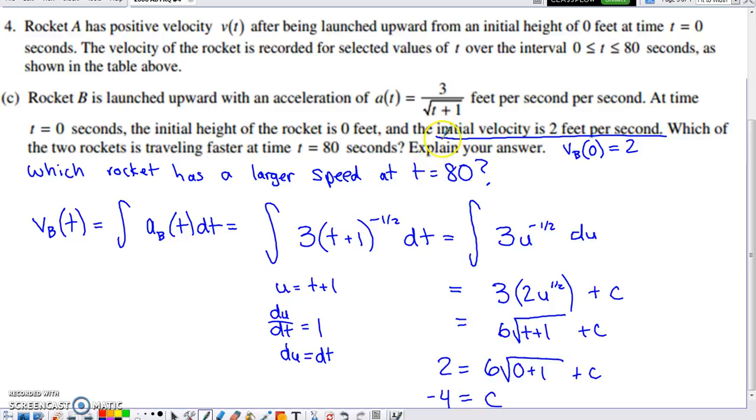I used what I underlined back here. The initial velocity of rocket B is 2 feet per second. So I knew this is my velocity function with the constant of integration that hasn't yet been solved for. My velocity is 2, so I put 2 in for velocity at the initial value of time, which is 0. I put 0 in for T. Quick calculation let me realize that this was just 6. If I solved for C, I got negative 4 for C after subtracting 6 from the 2.